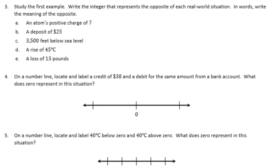Number 3: study the first example and use the integer that represents the opposite of each real-world situation. Write the meaning of the opposite in words. An atom has a positive charge of 7, so the opposite of that would be negative 7, meaning the atom has a negative charge of 7, because the opposite of positive is negative.